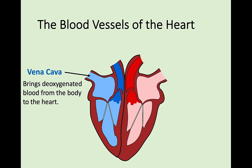The blood that's been around the body, which is now deoxygenated, comes through the vena cava into the right atrium. Once it goes into the right atrium it goes into the right ventricle. From the right ventricle, the blood gets pumped through the pulmonary artery. The pulmonary artery takes blood to the lungs - it's an artery going away from the heart. The blood goes to the lungs through the pulmonary artery to pick up oxygen.